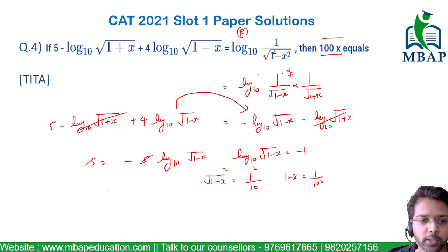What is x? x = 99/100. The question asks for the value of 100x. The value of 100x equals 99, and hence the answer is 99.